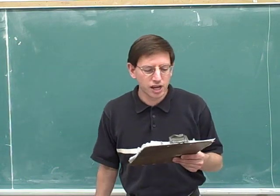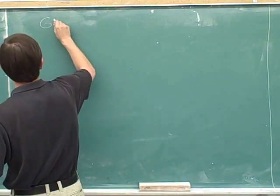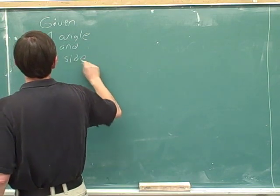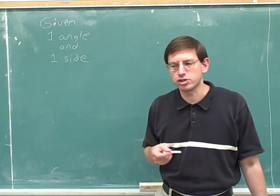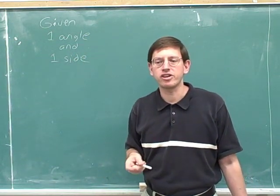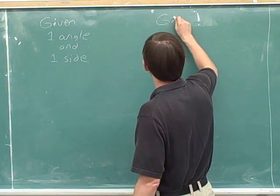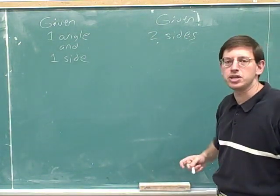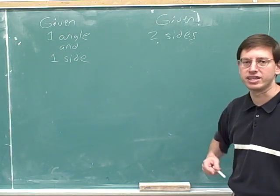There are two different situations we're going to discuss. The first is where we're told one of the angles and one of the sides of the triangle, and our job is to use trigonometry to figure out all the other angles and sides. The second situation is where we're given two sides and no angles — and again, you can figure out everything else about that triangle.